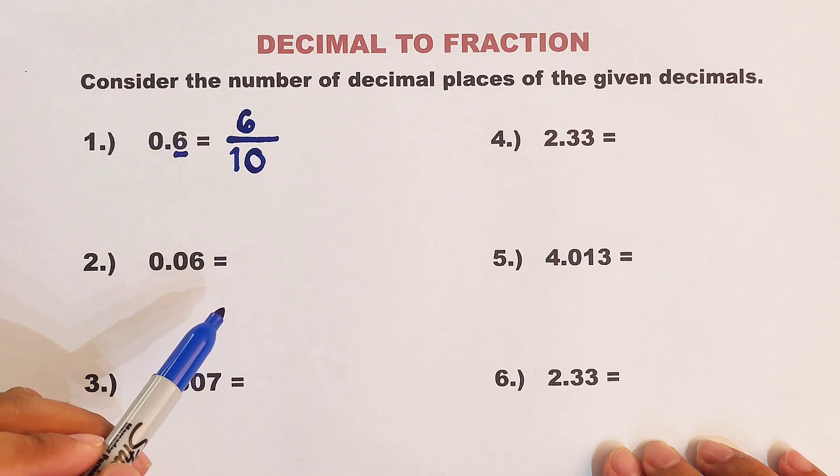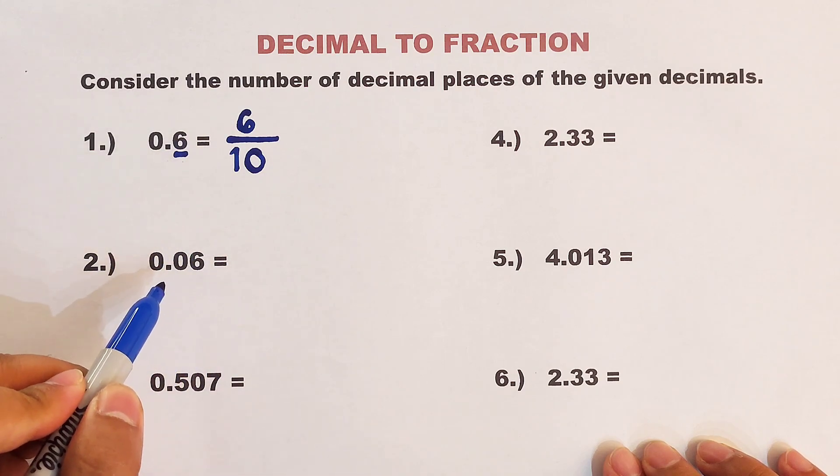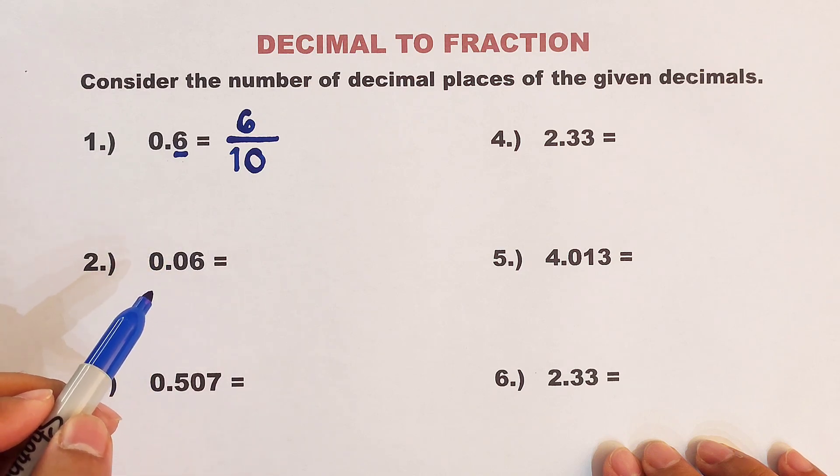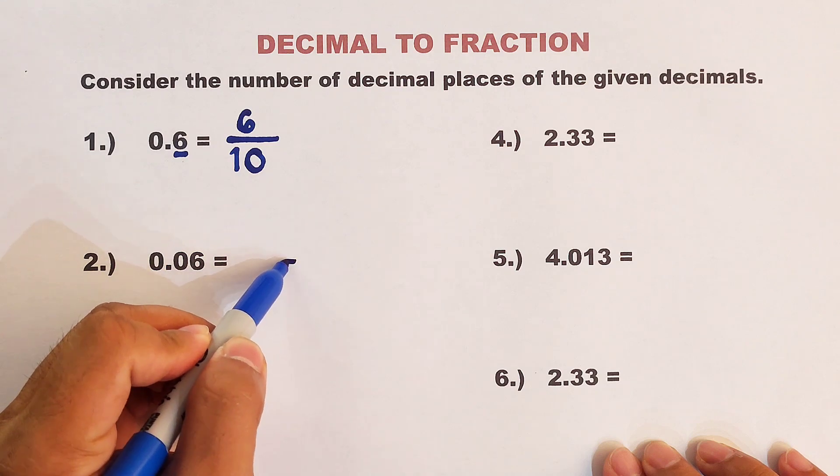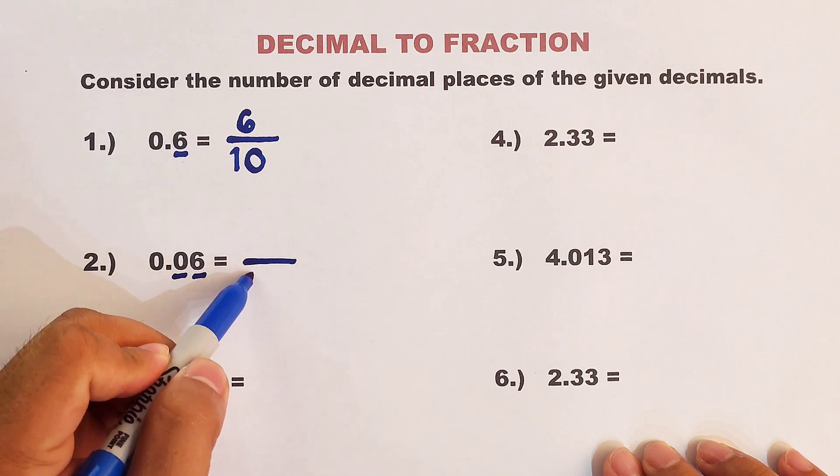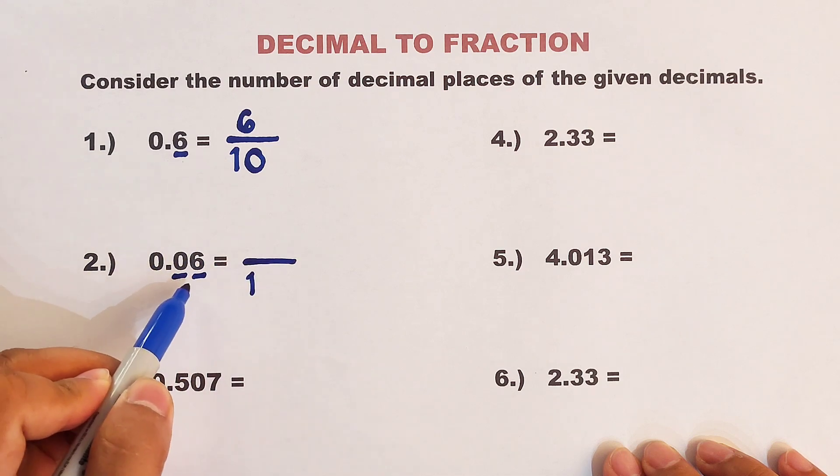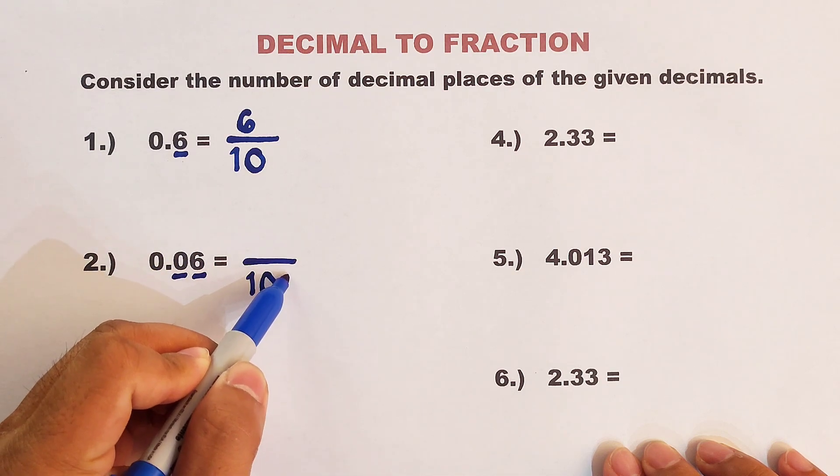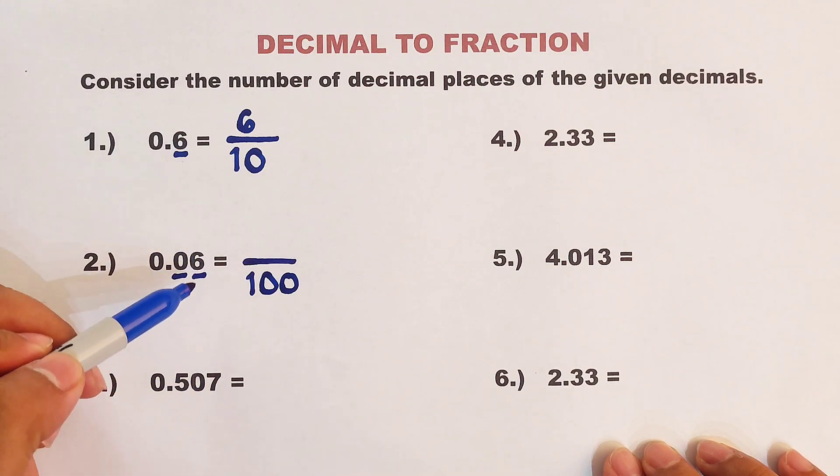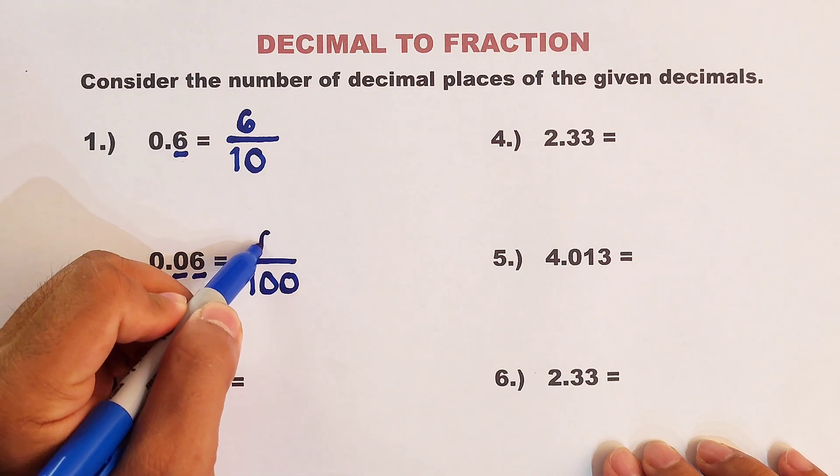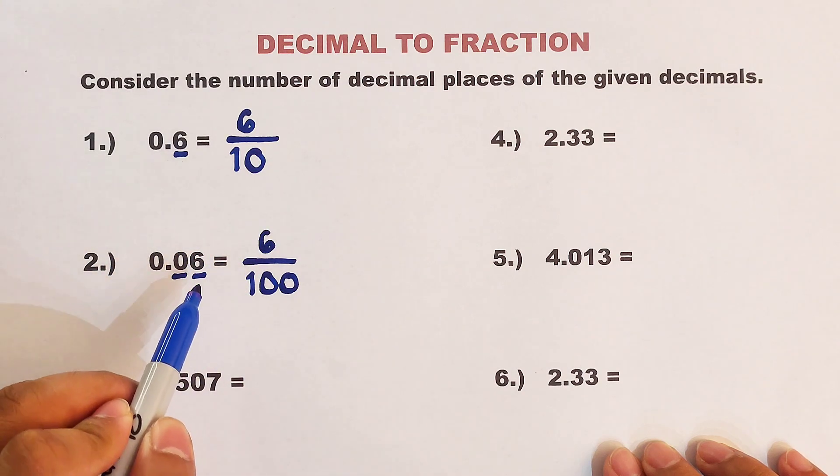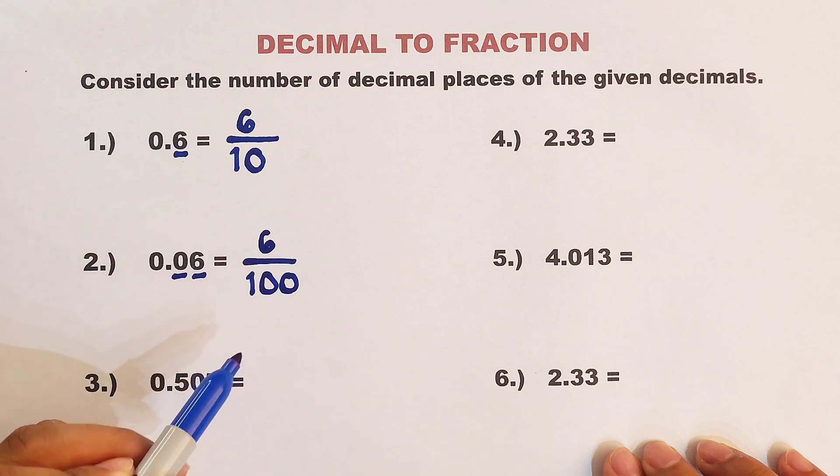Now let's go with the next example. We have 0.06. As you can see, if we count the number of decimal places, we have 1 and 2. So we will place here 1, and since we have 2 decimal places, we will put 2 zeros. Next, we will copy the number, which is 6, meaning 0.06 is equivalent to 6 over 100 in fraction.